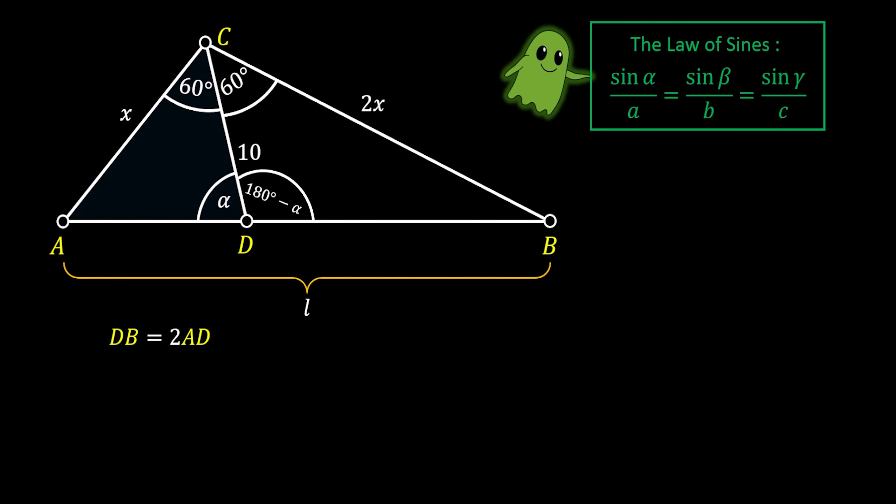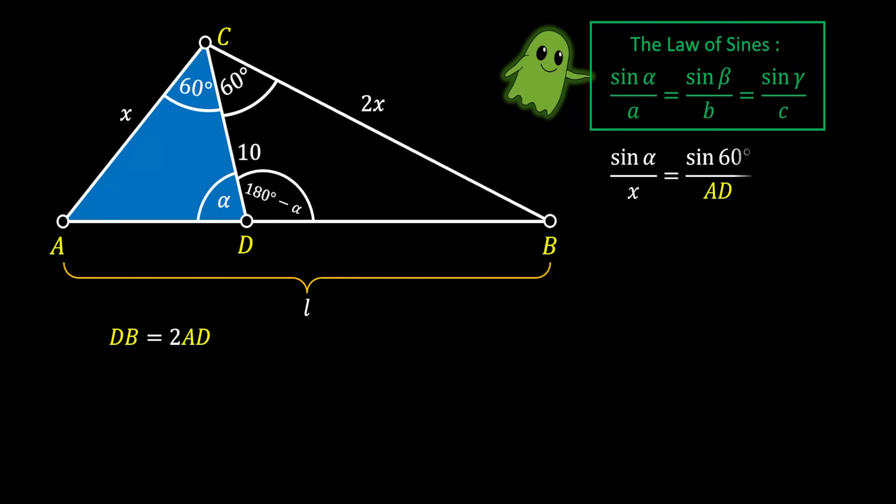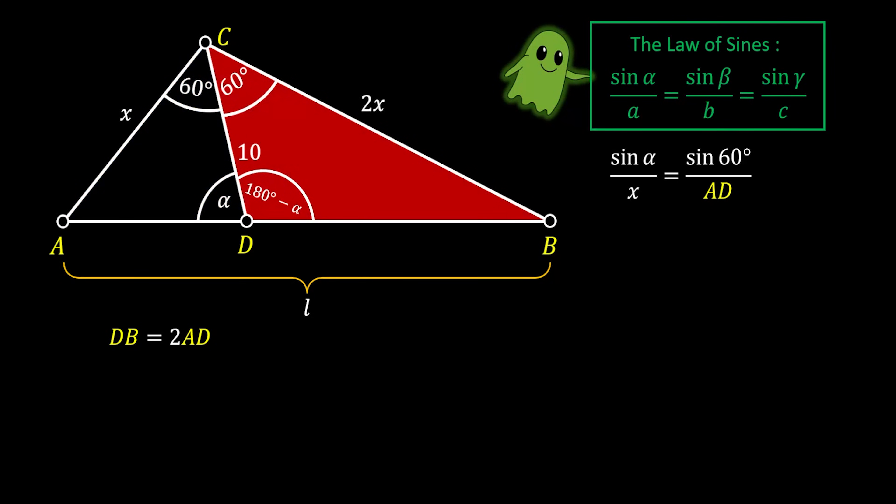First let's take a look at the blue triangle ADC. Using the law of sines, we can get that sine alpha over the opposite side of X is equal to the sine of 60 degrees over the opposite side AD. We can use the same thing on the red triangle DBC. We can say that sine of 180 degrees minus alpha over the opposite side 2X is equal to the sine of 60 over the opposite side DB. We can simplify this 180 minus alpha, because from trigonometry, we know that the sine of the supplementary angles is equal.